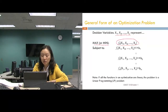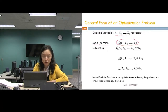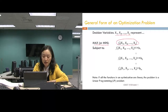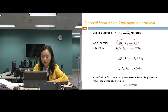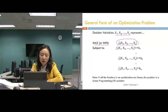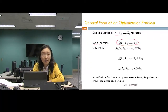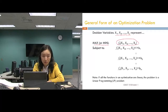Subject to the constraints: the constraints would also be some functions of the decision variables, either less than or equal to, greater than or equal to, or equal to a certain value. If all those functions — f0 all the way to fn — are linear, then our model is a linear programming model.